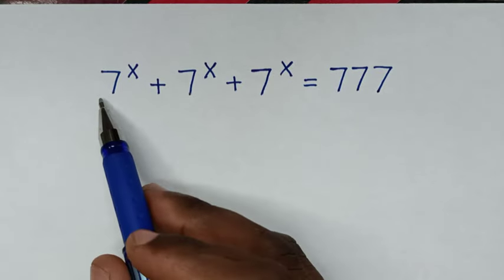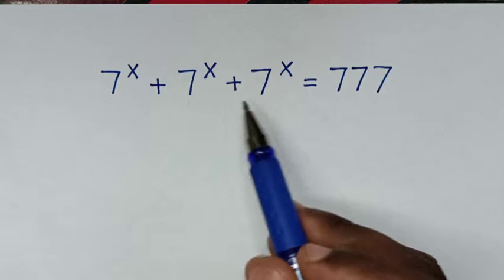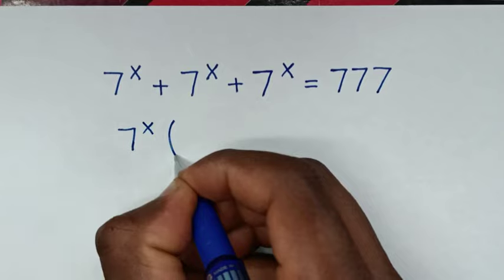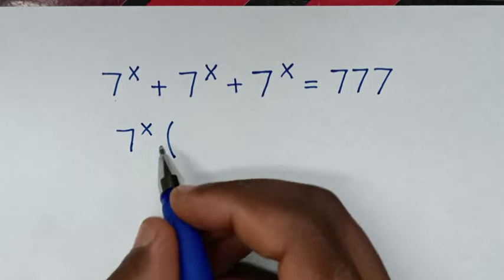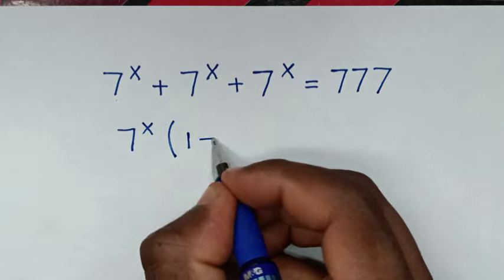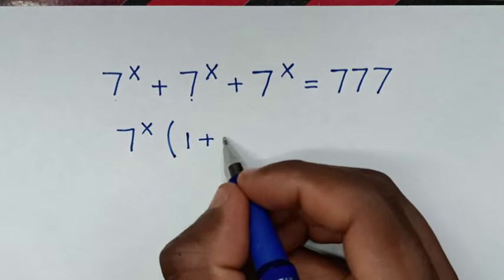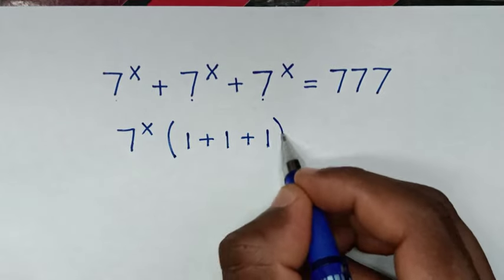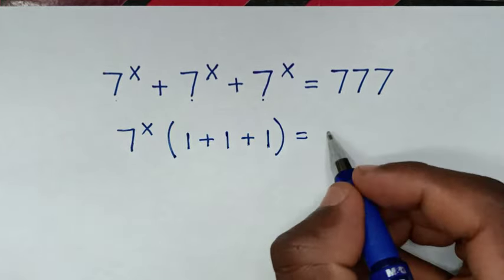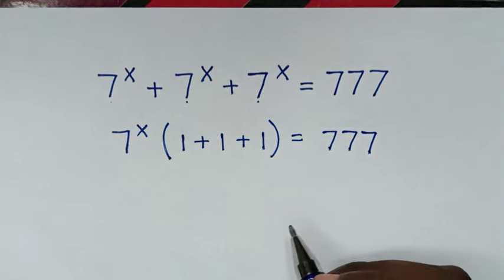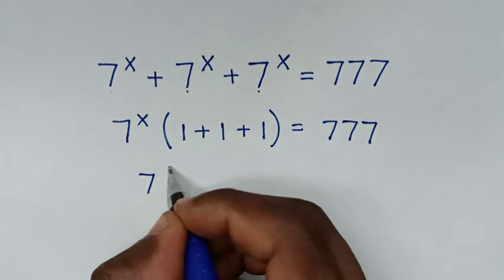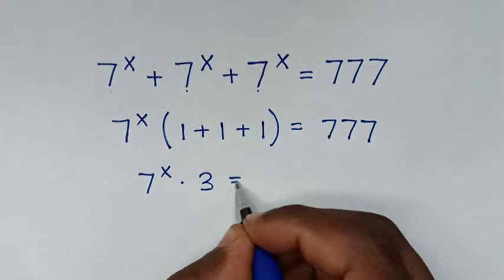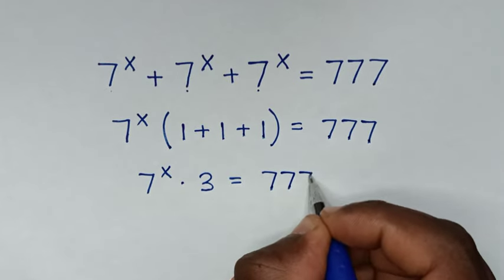Now in the first step, from the left side, 7 power x is common. So we'll take 7 power x out of the bracket. Then 7 power x divided by 7 power x is 1, plus 1, plus 1 in the bracket, is equal to 777. Then it will be 7 power x times 3 is equal to 777.